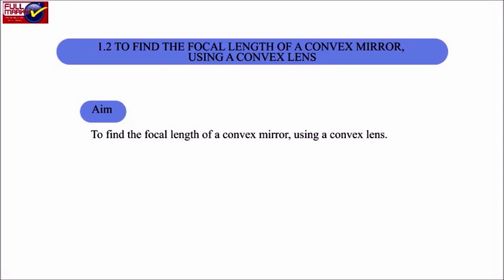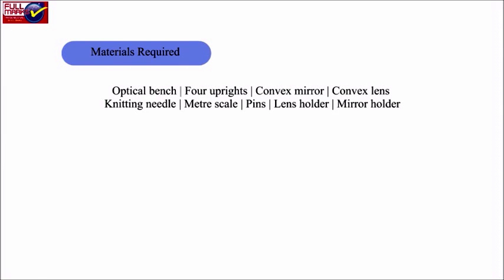Experiment 1.2: To find the focal length of a convex mirror using a convex lens. Materials required: optical bench, 4 uprights, convex mirror, convex lens, knitting needle, meter scale, pins, lens holder, and mirror holder.